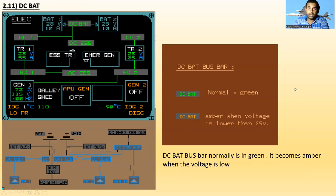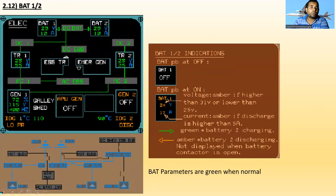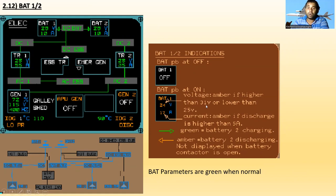Battery 1 and 2: Battery 2 supplies DC bat bus and Battery 1 also supplies DC bat bus, which then goes to the DC essential bus. With the battery push button at OFF, you see BAT 1 OFF. With it ON, the battery voltage is shown — for example 24 volts — amber if higher than 31 volts or lower than 25 volts. Current is amber if discharge is higher than 5 amperes. Green arrows indicate battery charging; amber indicates discharging. Not displayed when battery contactor is open. Battery parameters are green when normal.